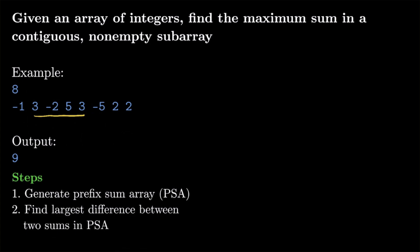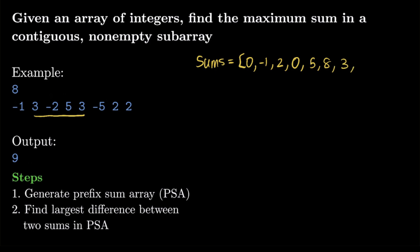Let's create the prefix sum array and call it sums. We start populating it with a 0 at the beginning, representing that no element has been used yet. Then we add each element cumulatively: 0 plus negative 1 gives negative 1; adding 3 gives 2; adding negative 2 gives 0; adding 5 gives 5; adding 3 gives 8; subtracting 5 gives 3; adding 2 gives 5; and finally adding 2 gives 7. That covers our first step.